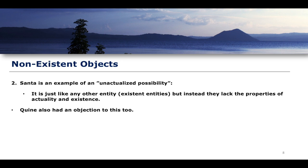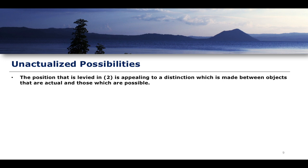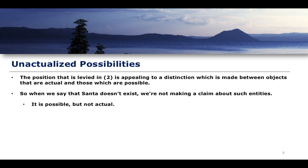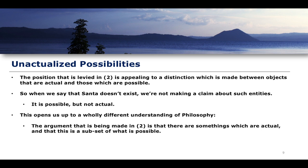Quine also rejects this second proposition. The idea being levied here appeals to a distinction between objects which are actual and those which are possible. When we say Santa doesn't exist, we are making a claim about things which are possible but not actual. This develops a wholly different philosophical understanding: the argument being made is that there are some things which are actual, and this is just a subset of what is possible — so ontological commitments may involve a whole array of modal claims about possibility and actuality.